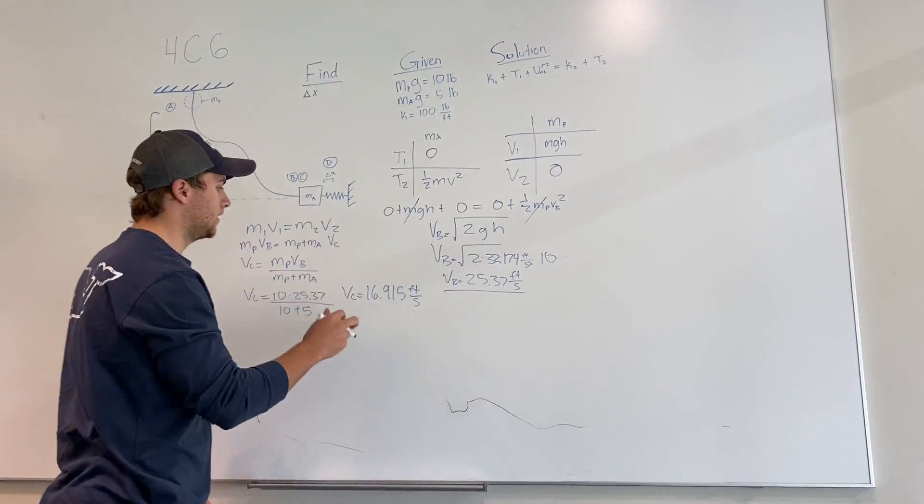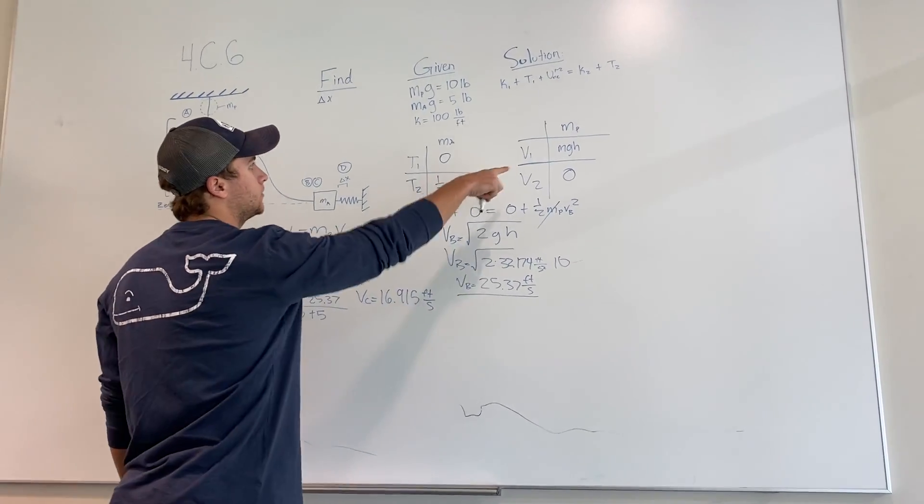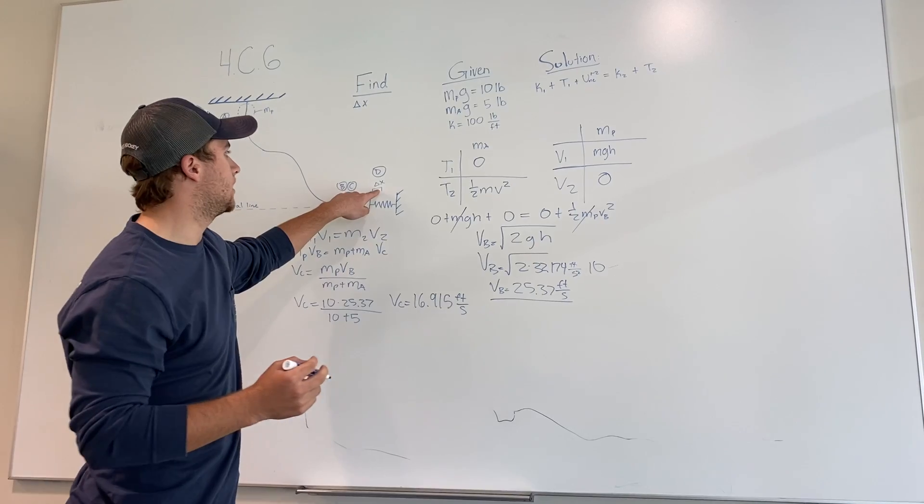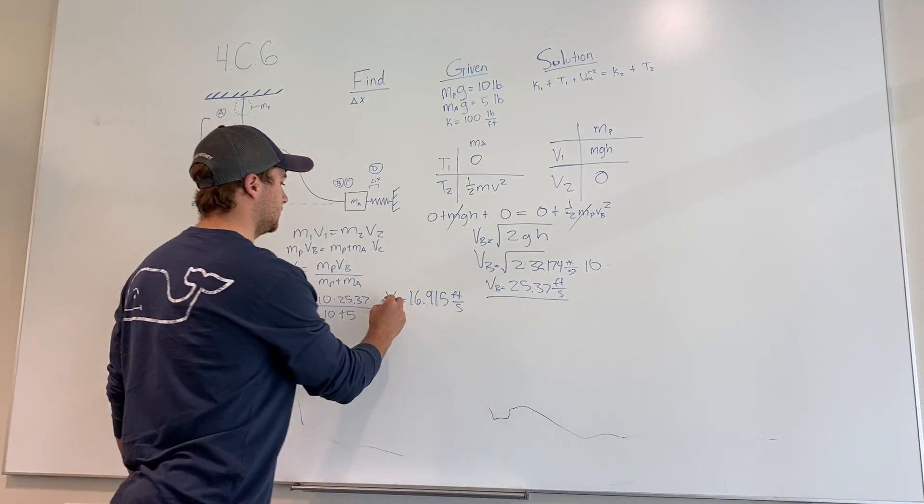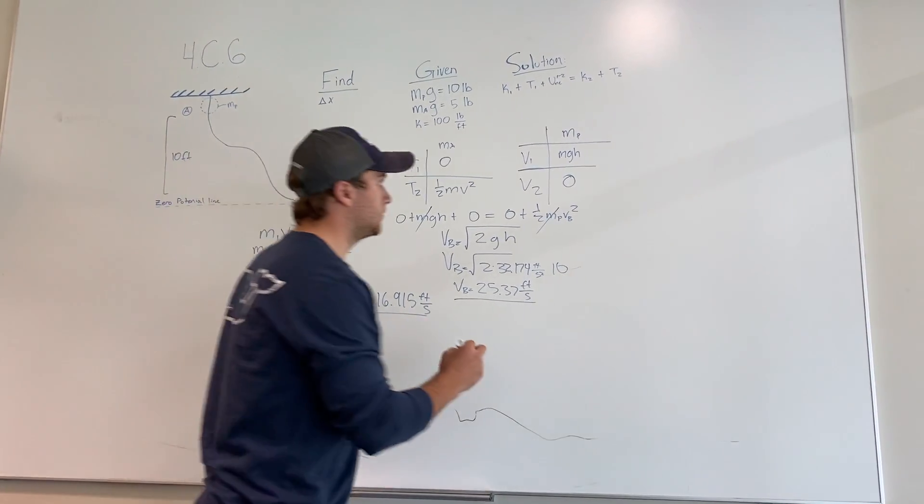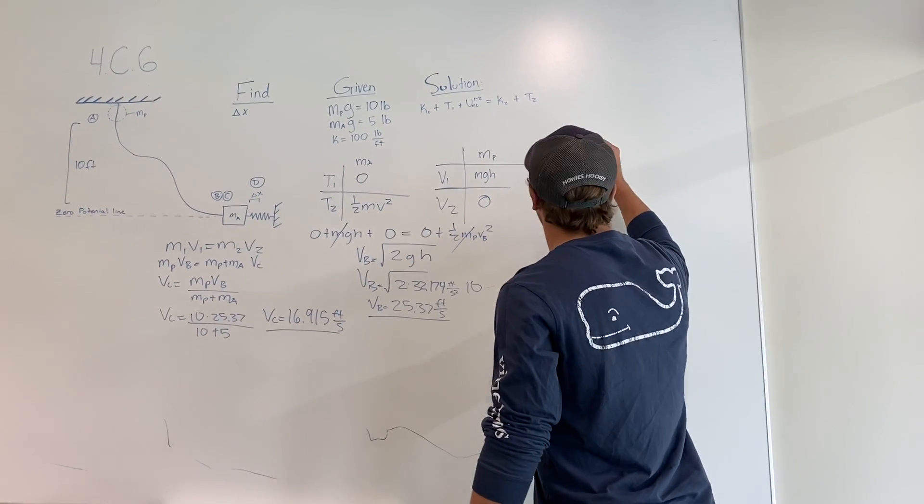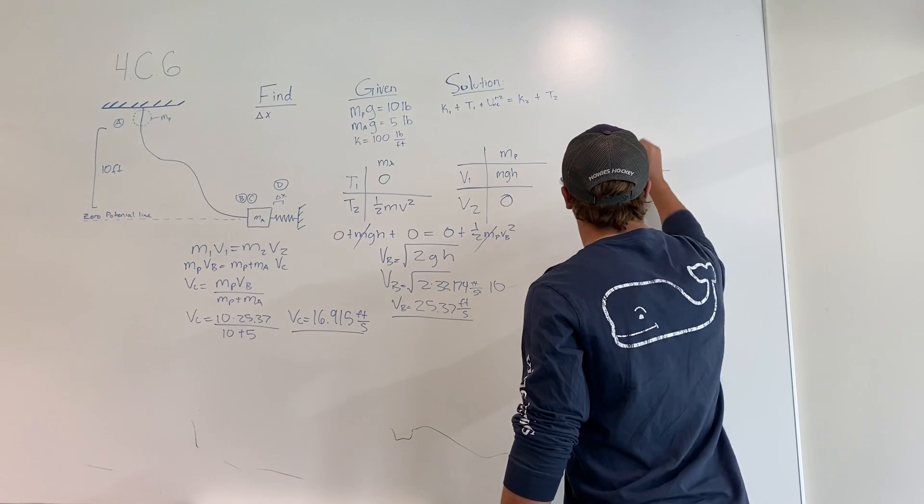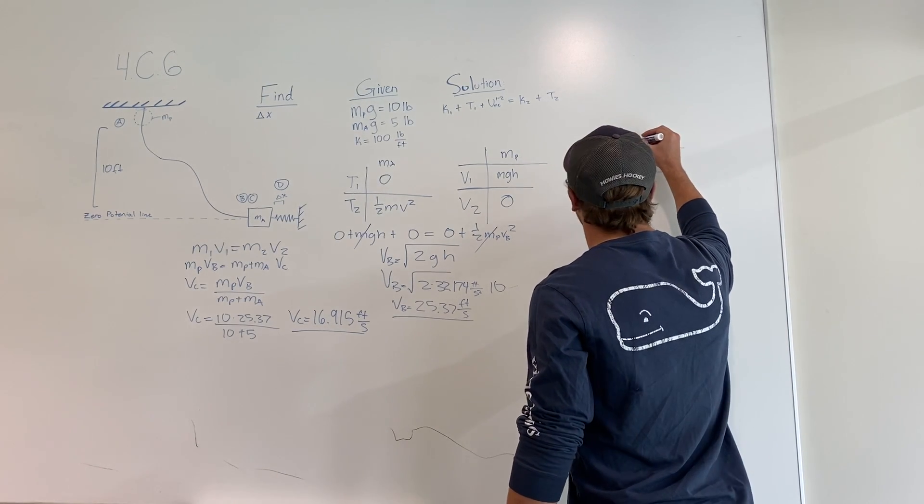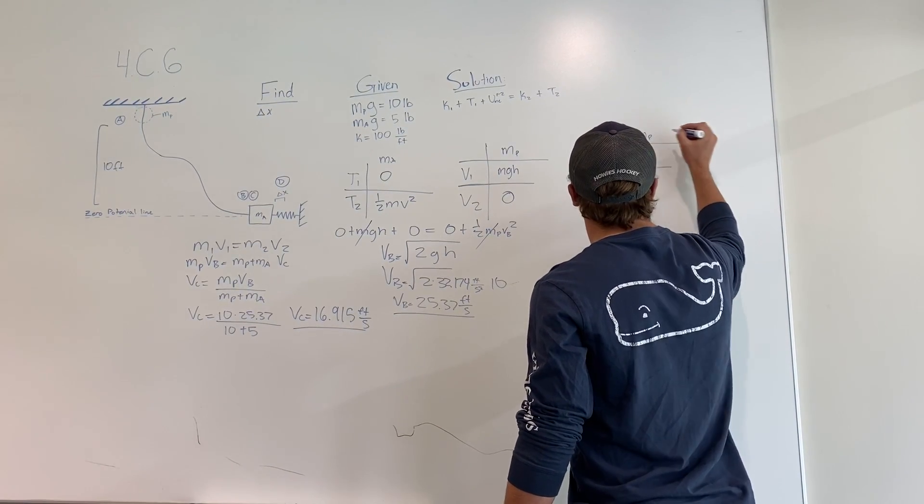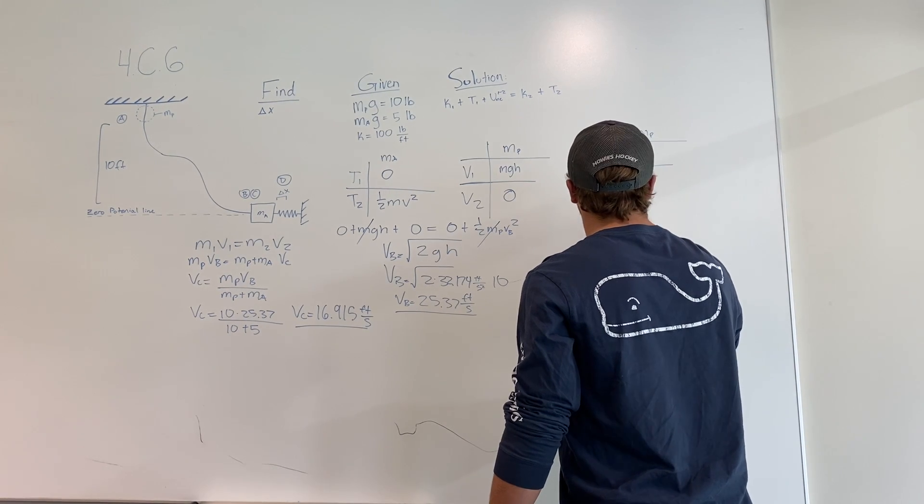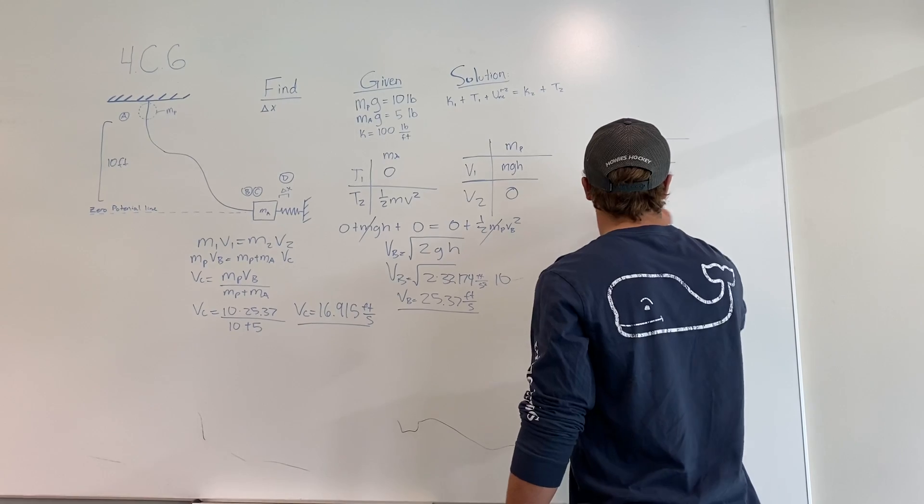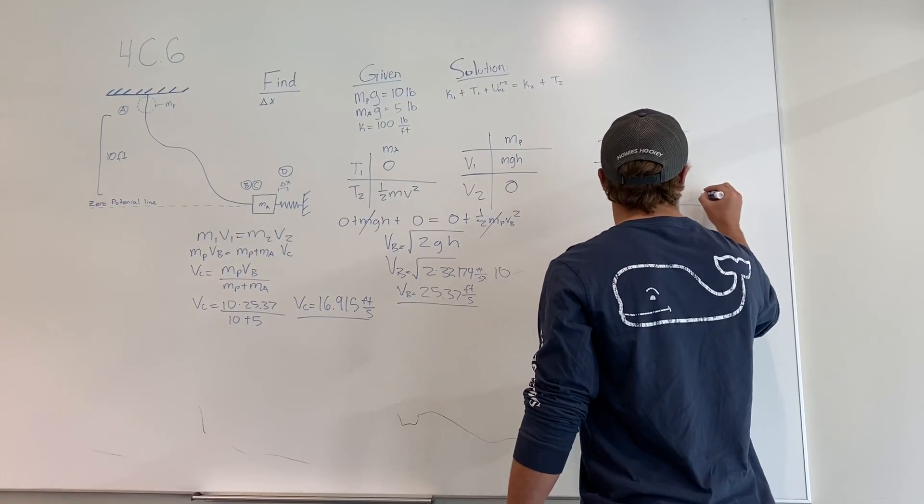Now we have Vc with both masses combined. And then we can plug it in and find another table using the energy to eventually find the potential delta x in the spring. So we use this to make another table over here of T1, T2, mass P and V1, V2 of mass and the spring.